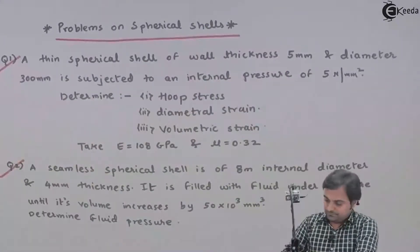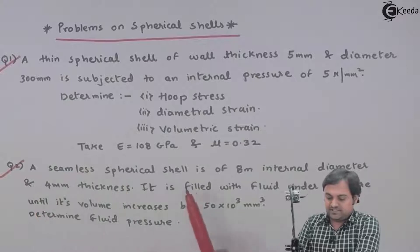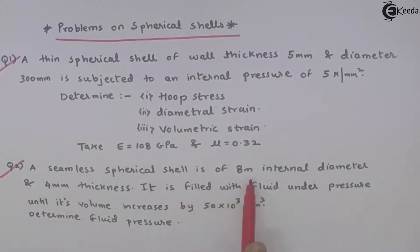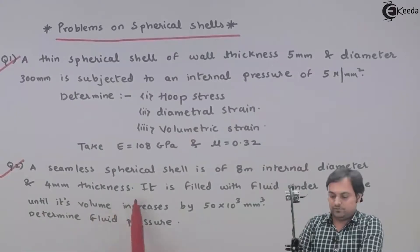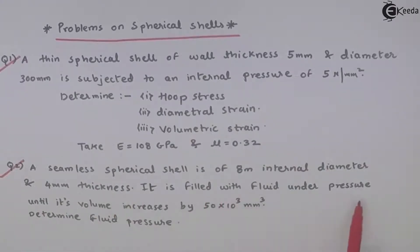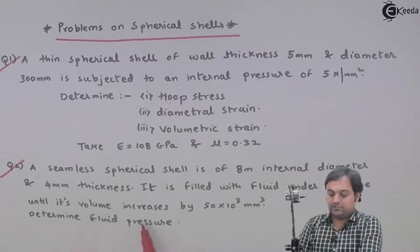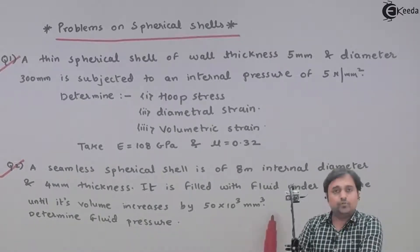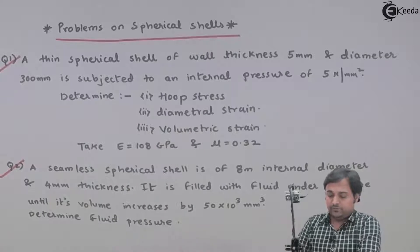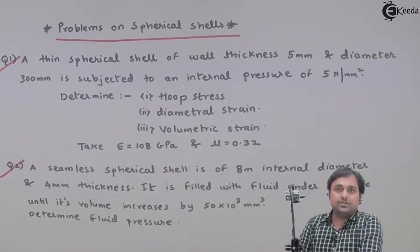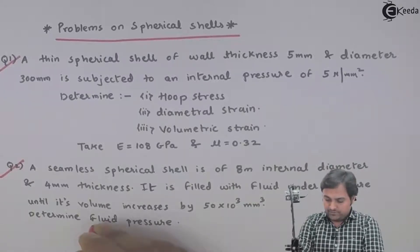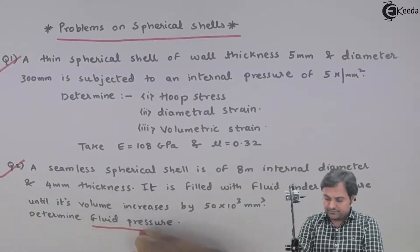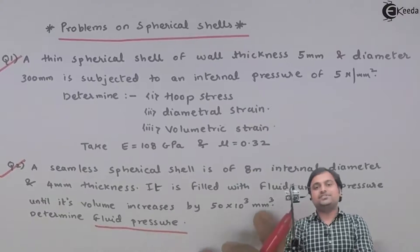Let us read this question. A seamless spherical shell is of 8 meter internal diameter and 4 mm thickness. It is filled with fluid under pressure until its volume increases by 50×10³ mm³. Determine the fluid pressure. This is the question, and we are asked to find the fluid pressure inside the spherical vessel.